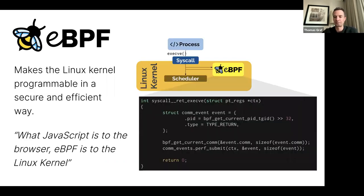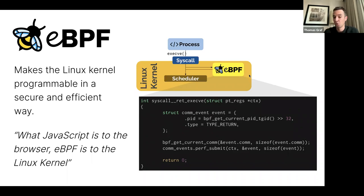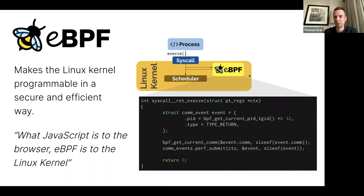So what is this eBPF technology? eBPF is the ability to make a Linux kernel — and now also a Windows kernel — programmable in a secure and efficient way. We can write programs and attach them to the Linux kernel, executing them when certain things happen, for example when a process makes a system call or when a network packet is being received or transmitted. If you want to boil it down to one sentence: it is what JavaScript is to the browser, eBPF is to the Linux kernel.